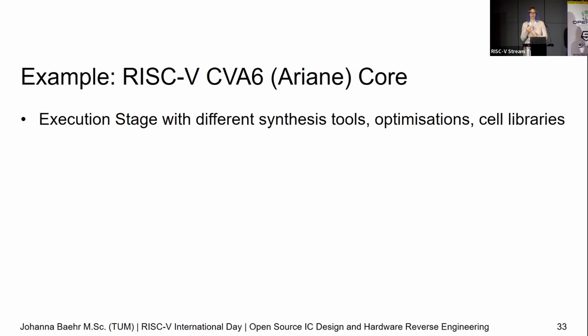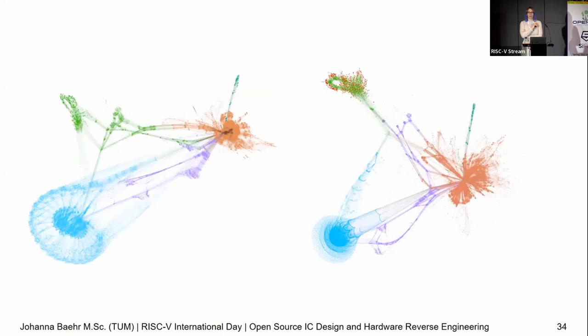We wanted to see what happens if one team synthesizes it one way and another does something completely different — is it still comparable? I used a complete open source toolchain: YoSys and Qflow with an open source cell library. We compared it to a company that does professional chip layouting. We downloaded the same RTL files and looked at the results. There's a fair amount of similarity, and even visually without any machine learning we can say this is very similar — despite one implementation having about 20,000 gates more than the other. Form follows function: structural differences show functional differences, and structural similarities show functional similarities.